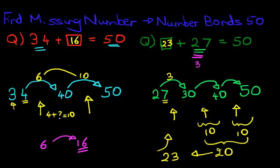30 to 40 is 10 and 40 to 50 is another 10. So the answer is 23. And you'll be doing it that quickly. So that is find the missing number with number bonds to 50 with addition questions.